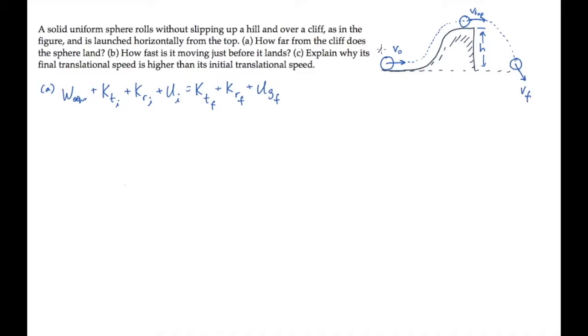If we choose the starting point as I, the initial point, and the edge of the cliff as the final point, we can see that in between I and F, there's no work other. At the initial point, the ball is translating, so it has this kinetic energy. It's rotating, so it has this rotational kinetic energy. And choosing Y equals zero on the ground means that it has no initial gravitational potential energy.